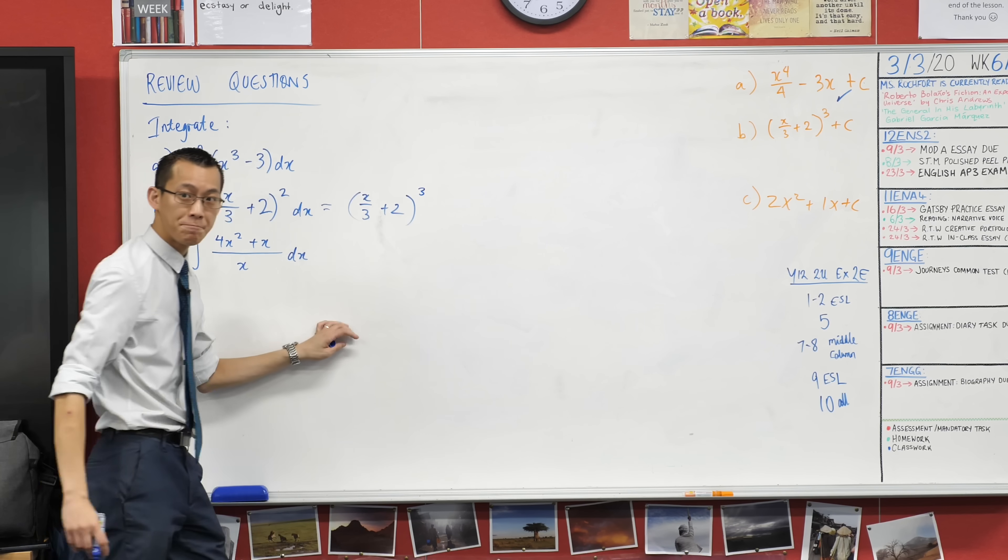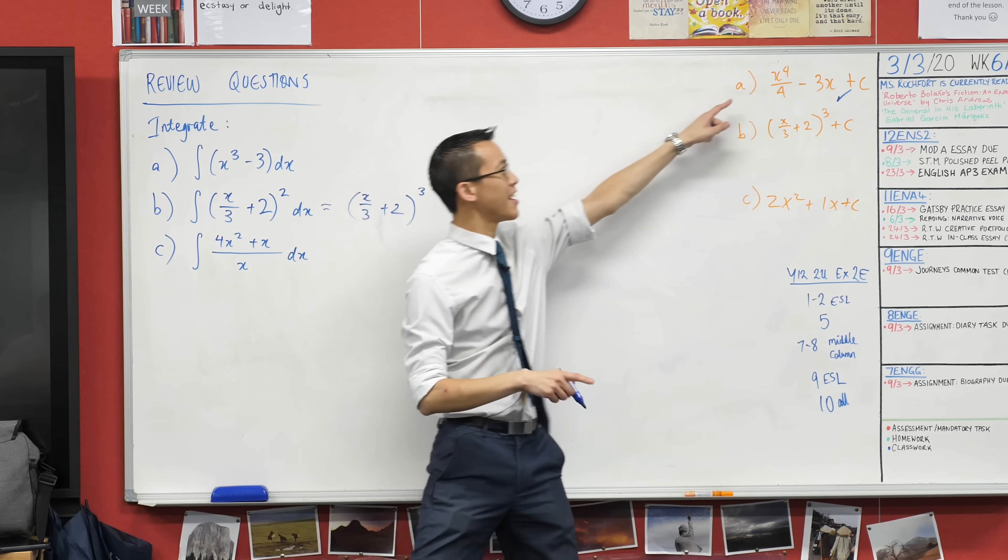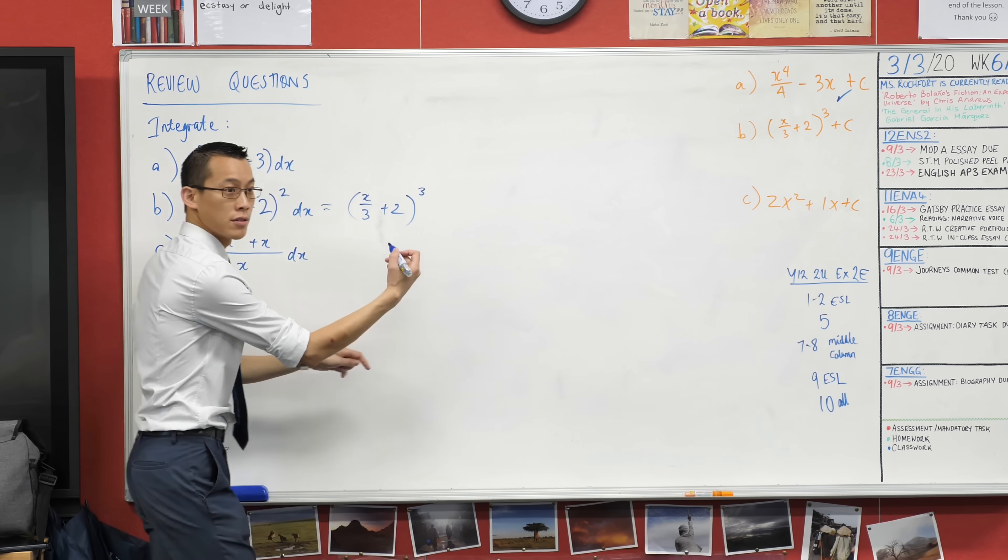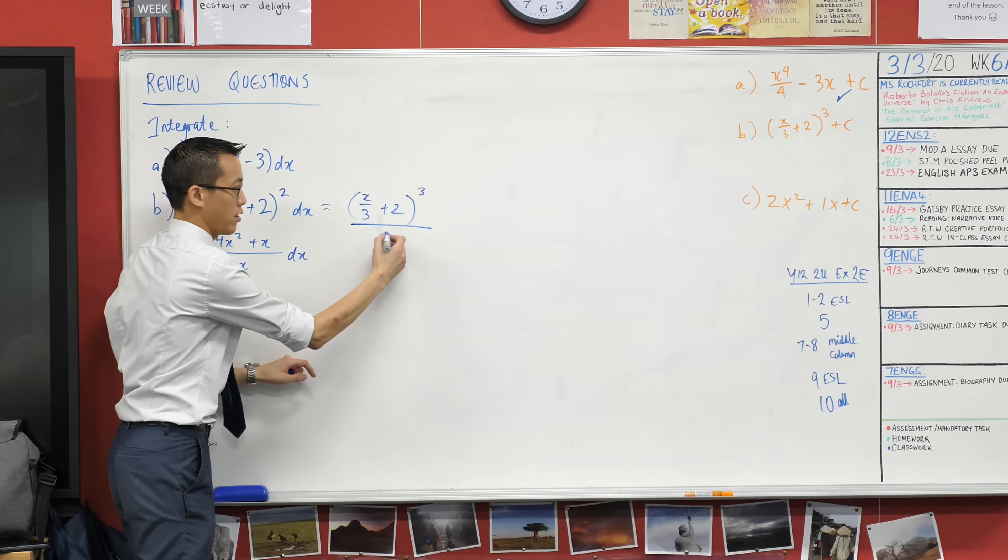But then the next step is, just like with this x to the 4 over 4, you divide by the new power. So then we get a 3.